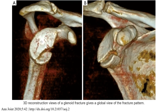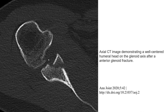This is a 3D reconstruction view of the glenoid fracture, giving a global view of the fracture pattern. As we can see here, there is fragmentation with multiple planes and a fracture line. On this image also we can see the fracture line, and this shows fracture fragmentation. This axial CT image demonstrates a well-centered humeral head on the glenoid axis. This is an anterior glenoid fracture.